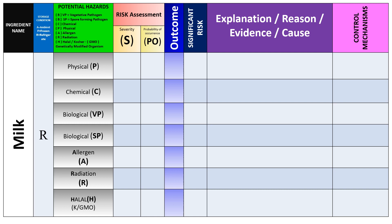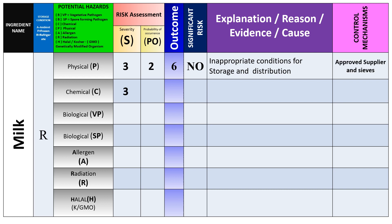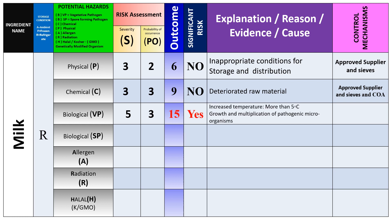The milk table follows. It will be refrigerated by temperature. The physical hazard has severity three and probability two, giving a result of six — not a significant risk. The cause is inappropriate storage and distribution conditions; control measures are approved supplier and sieves. The chemical hazard has severity three and probability three, giving nine — also not significant. Controls include approved supplier, sieves, and certificate of analysis.